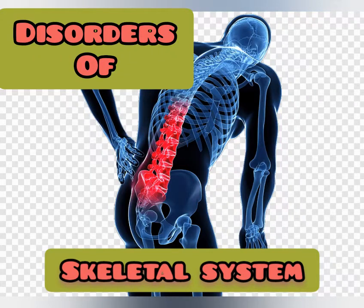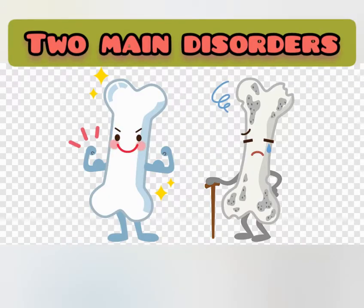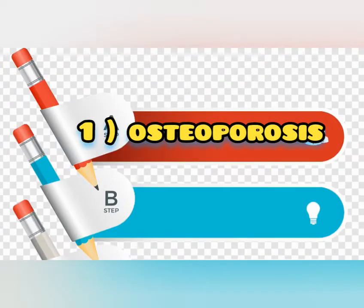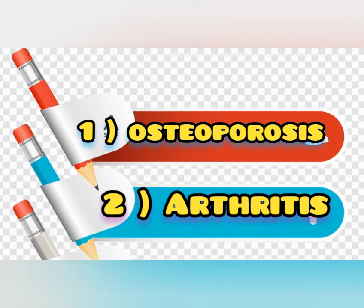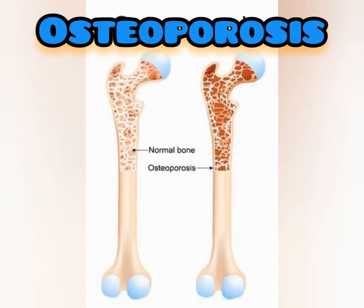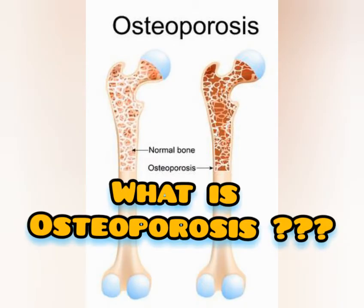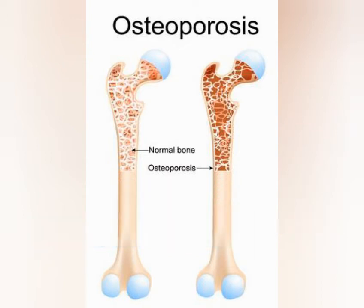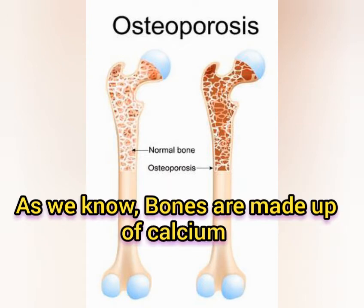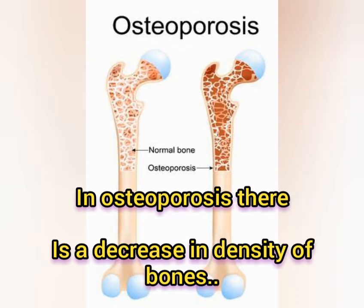Hello dear students, today we are going to discuss the disorders of the skeletal system. The two main disorders we will discuss are osteoporosis and arthritis. Let's talk first about osteoporosis. As we know, bones are made up of calcium. In osteoporosis, there is a decrease in the density of the bones.